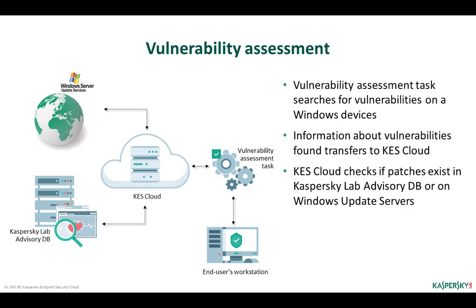Kaspersky Security Network Agent gathers information about the updates of the operating system and Microsoft software that are already installed and yet need to be installed. Kaspersky Endpoint Security does not participate in this process. Kaspersky Security Network Agent receives information about available updates either from the Windows Updates Service, which connects directly to Microsoft Online Update servers, or from Kaspersky Endpoint Security Cloud, which checks Kaspersky Lab Advisory DB — the proprietary threat and vulnerability database. Based on the data about available vulnerabilities and updates, Kaspersky Security Network Agent defines which updates are installed and which are not, and informs Kaspersky Endpoint Security Cloud.